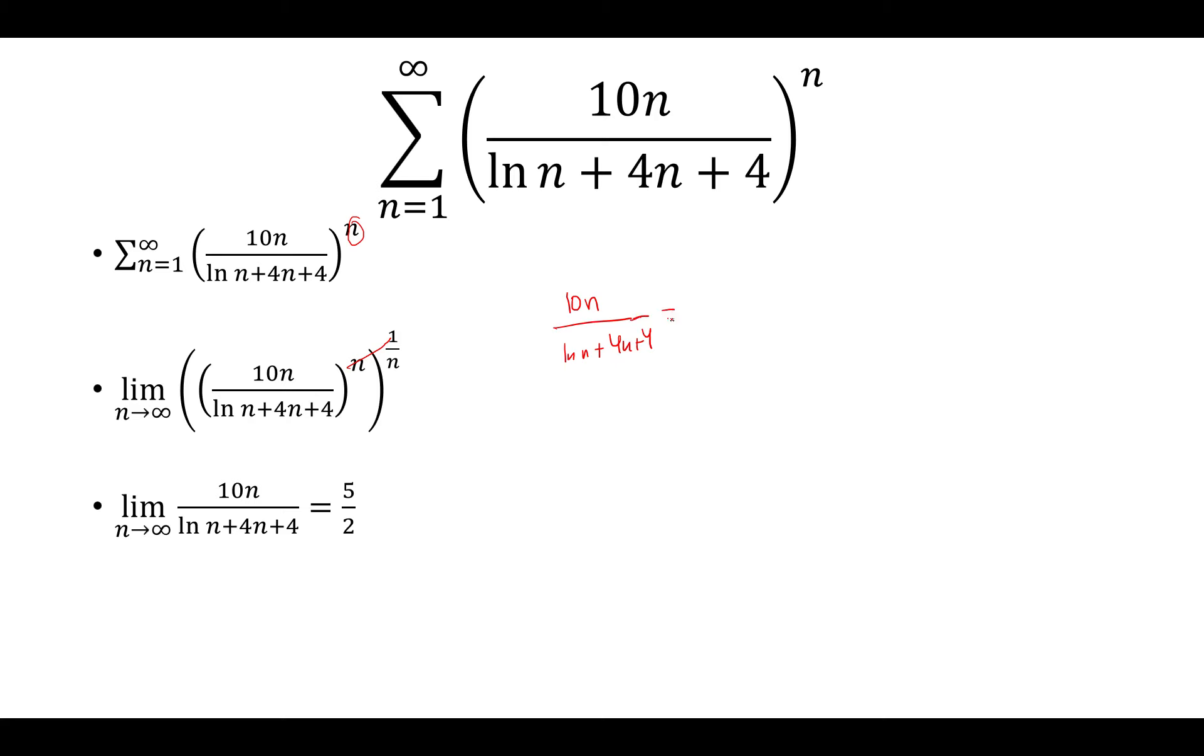So when we divide everything by n, that's going to equal 10 over natural log of n over n plus 4 plus 4 over n.